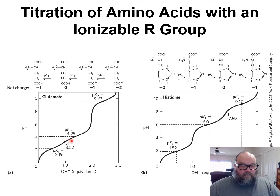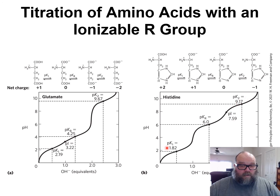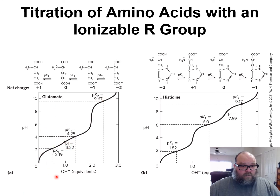PKR for glutamate is 4.25; PKR for histidine is 6.0. The PI value for histidine is 7.56 because you have to add all three pK values and average them out. The isoelectric point for glutamate is similarly calculated by adding those three up and averaging them out.